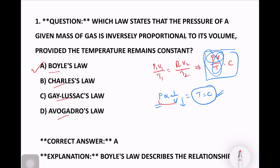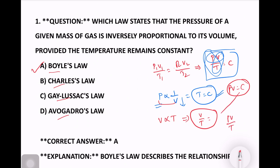So what do we call this? PV is equal to constant — that is Boyle's Law. The next law: volume is proportional to temperature, so V by T is equal to constant — that is Charles's Law. And P by T is equal to constant — that is Gay-Lussac's Law.